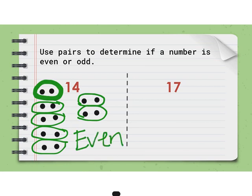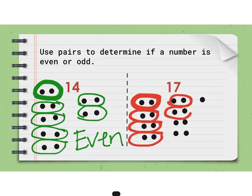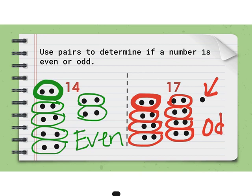Let's look at 17 using the same strategy. I'm going to make pairs — remember a pair has two. So here's one, two — that's one pair — three, four, five, six, seven, eight, nine, ten, eleven, twelve, thirteen, fourteen, fifteen, sixteen, seventeen. Now let me make my groups. My pairs would look like this because I have two in a pair, and then look what happens — I have one odd man out over here. So 17 would be an odd number because I cannot divide it equally into two equal groups; I'm going to have one left over.